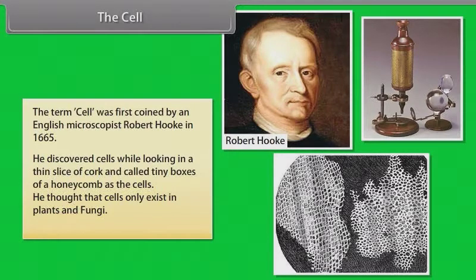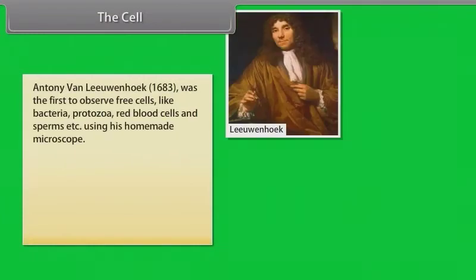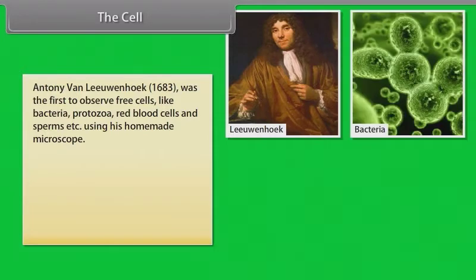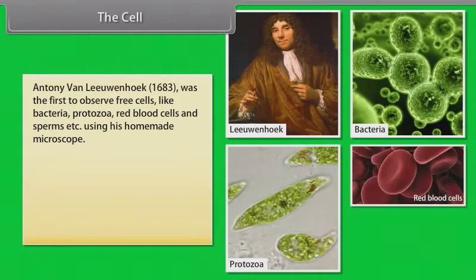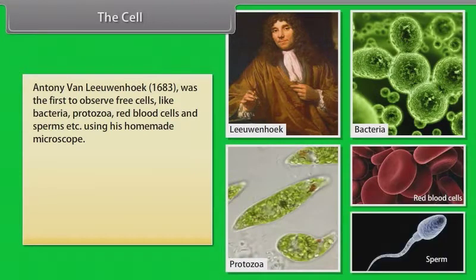He thought that cells only exist in different plants and fungi. Antony Van Leeuwenhoek was the first to observe free cells like bacteria, protozoa, red blood cells and sperms, using his homemade microscope.